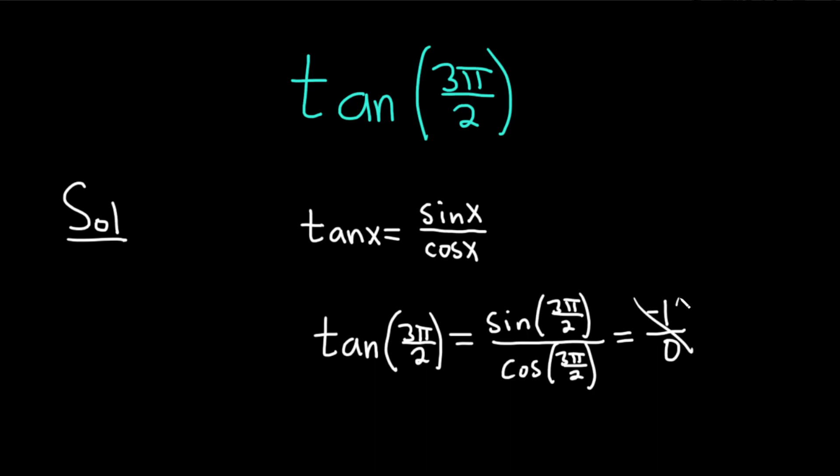And so this is undefined because you can't have 0 in the denominator. So the tangent of 3π over 2 is undefined. So when someone asks what is the tangent of 3π over 2, you can just say that's undefined, because it's not a value that we have.